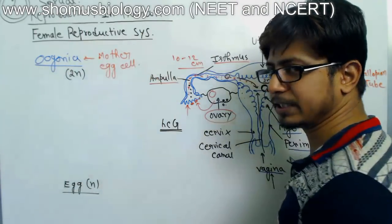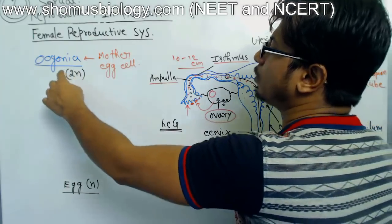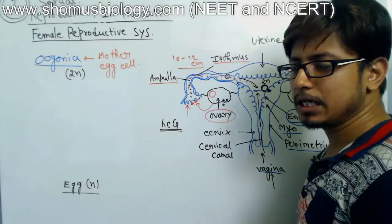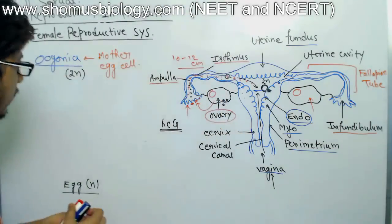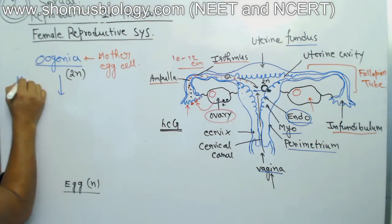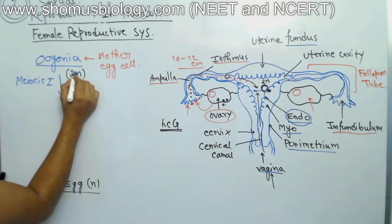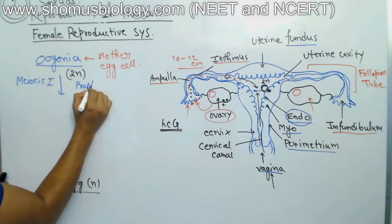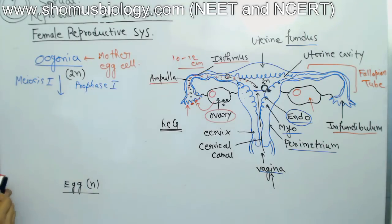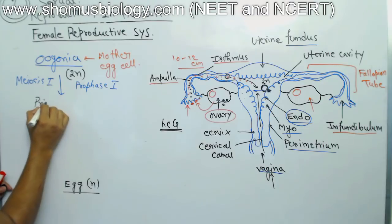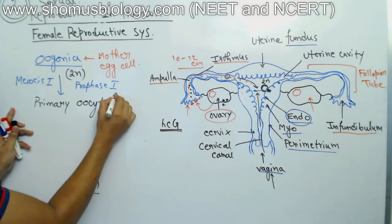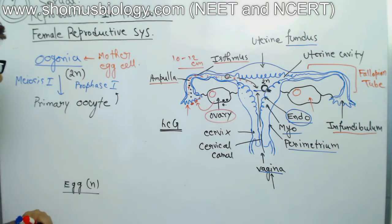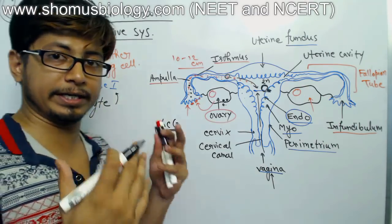The oogonium, whatever number is present before birth, remains as it is even after birth. The oogonium then slowly starts to mature: it undergoes meiosis division. However, the cell cycle is arrested at prophase 1 of meiosis 1. All the cells produced at this stage are known as primary oocytes, and these primary oocytes are arrested at prophase 1 of the meiotic division.